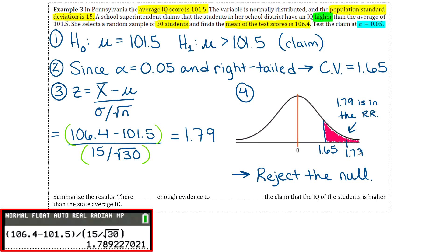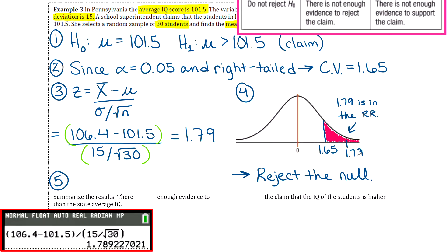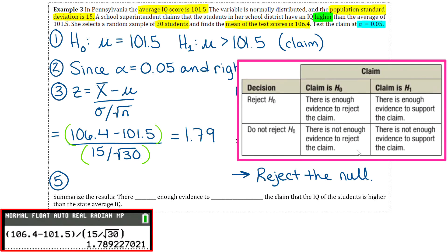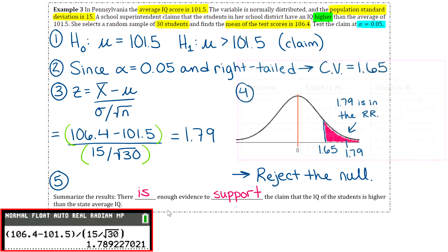Step five, we're just going to summarize our results. That's where we're going to use that summary table from the last section. We have to look at two things: where the claim is located. Our claim was in the alternative hypothesis, so that's the second column here. Our decision was to reject the null, so we have rejected H naught. For reject H naught with the claim in the alternative, we're going to say that there is enough evidence to support the claim. In step five, we'll say there is enough evidence to support the claim that the IQ of the students is higher than the state average IQ.